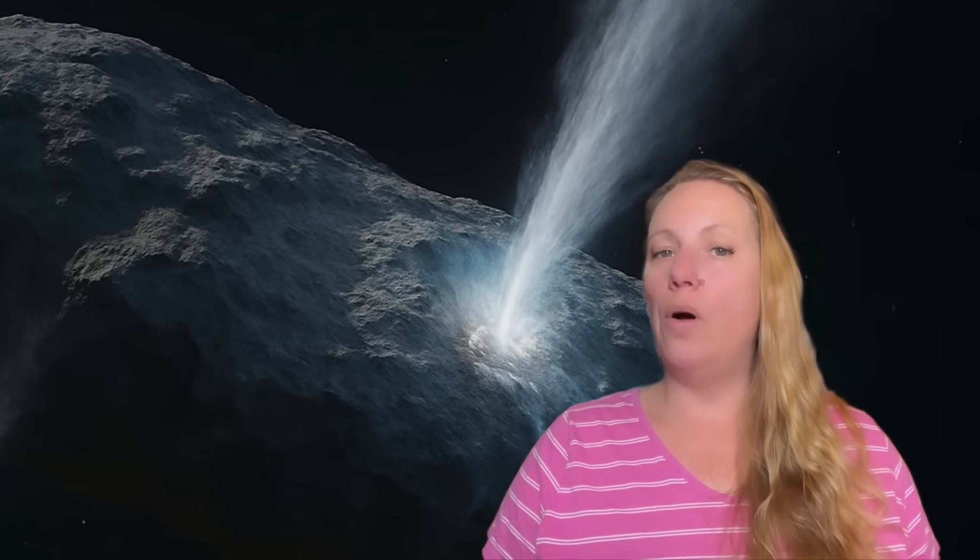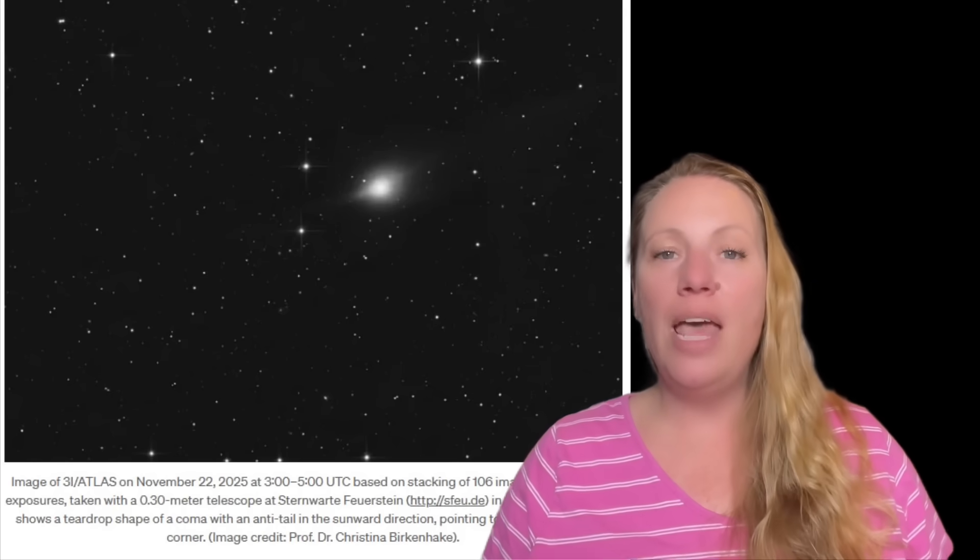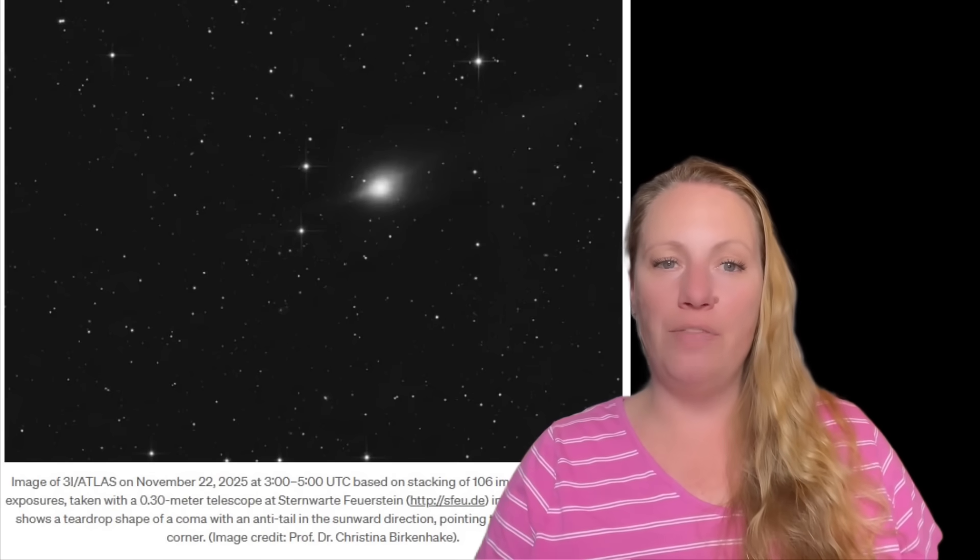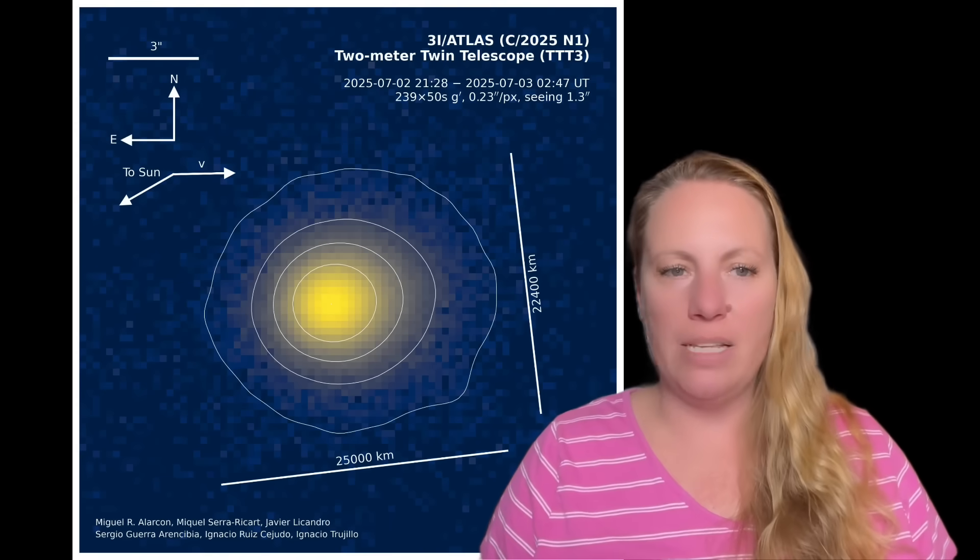So we've seen all the new images that the science took of interstellar object 3i atlas in November and already in the first days of December. And they noticed something strange. Not only Avi Loeb is noticing something strange, the other scientists as well, just not NASA, as it seems. They say it's all normal. They don't even address all these anomalies.